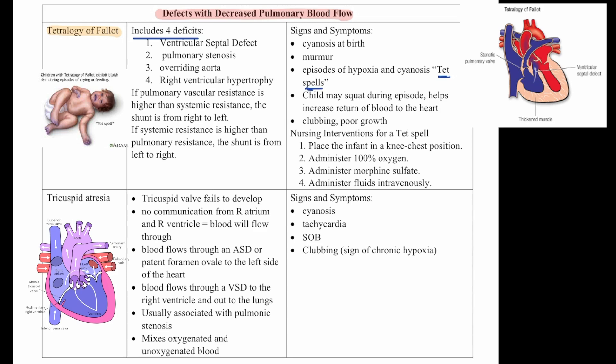They may have clubbing of their fingers and poor growth. Nursing interventions for a TET spell: place the child in a knee-chest position, administer 100% oxygen, administer morphine sulfate, and administer IV fluids.